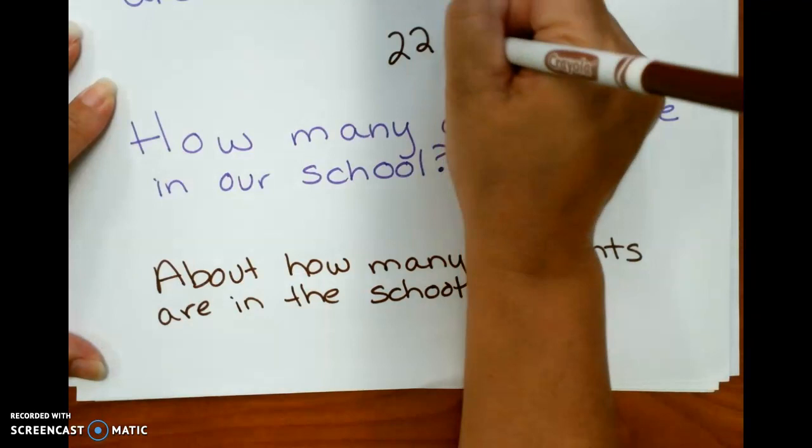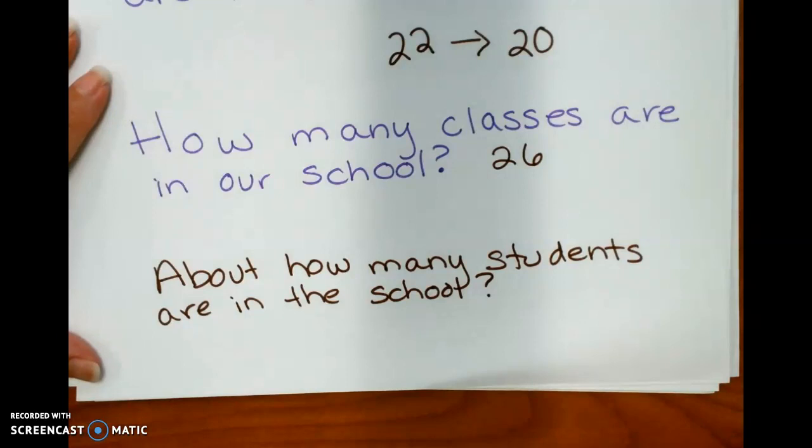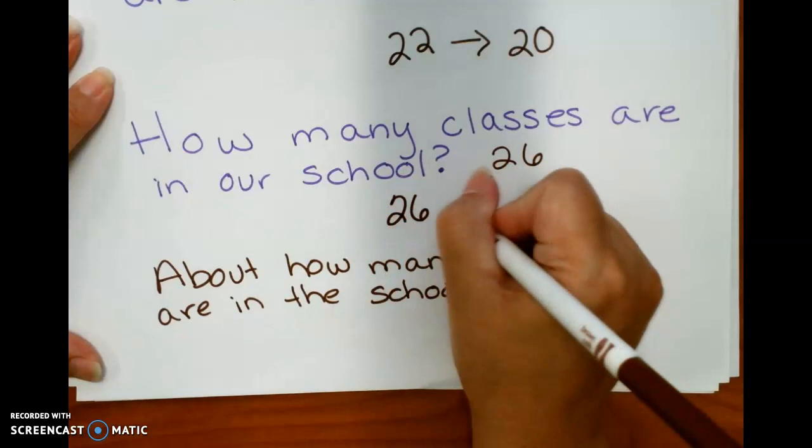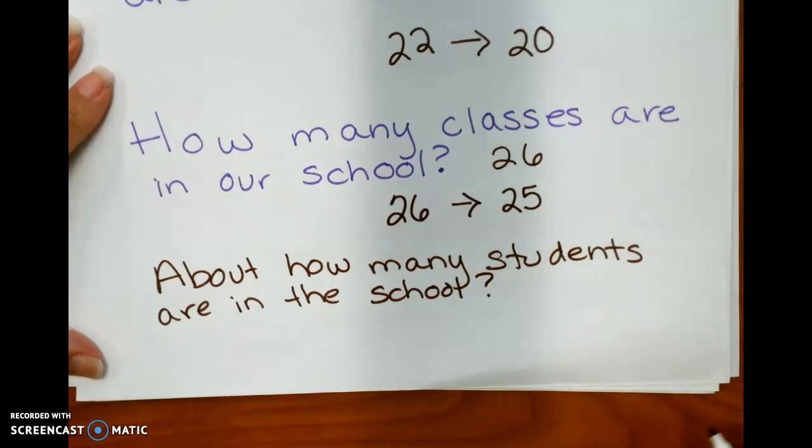Now, if I round 26 to the nearest 10, it's going to be 30, but I think that's going to give me an estimate that's too high. So I'm going to take 26 and round it to 25 because I also know that I can multiply 25 times 2 pretty easily.